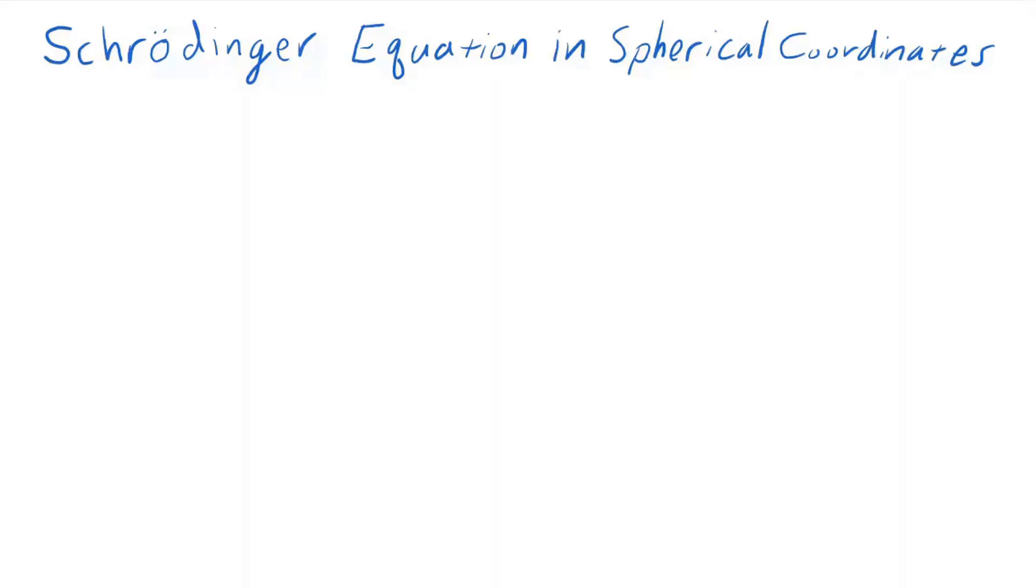We're about to begin solutions of Schrödinger's equation for systems in three dimensions. I think the first clear application for three-dimensional solutions is the atom, starting of course with the hydrogen atom.